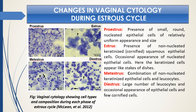Let us discuss the changes in vaginal cytology during the estrus cycle in four different phases. During proestrus, we find small round epithelial cells with distinct nuclei that are relatively uniform in appearance. As time passes into estrus, the cellular appearance totally changes — what we find are keratinized, or cornified, squamous epithelial cells placed like a stack of dishes, without prominent nucleus, and with granulated cytoplasm.